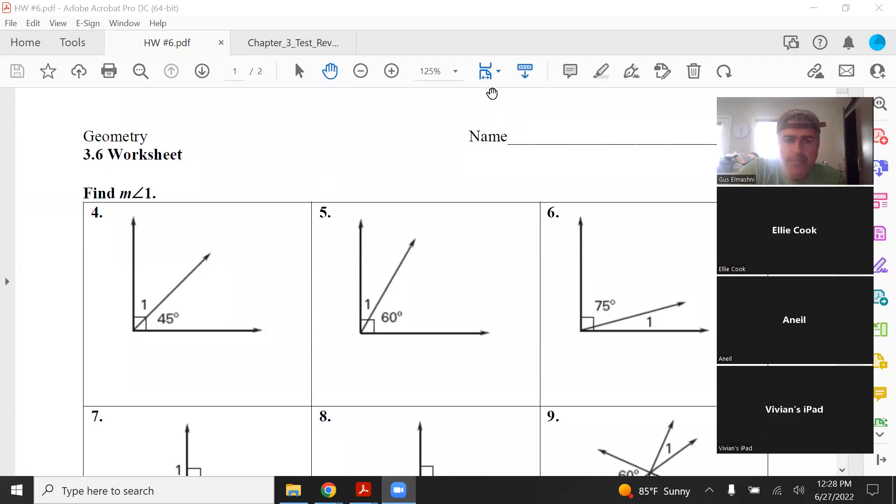Okay, we're recording 3.6 Worksheet, which is labeled Homework Number 6. Here you're asked to find the measure of angle 1. You can see they have a 90-degree angle, so angle 1 plus 45 degrees has to equal 90 degrees. Therefore, angle 1 equals 45 degrees.